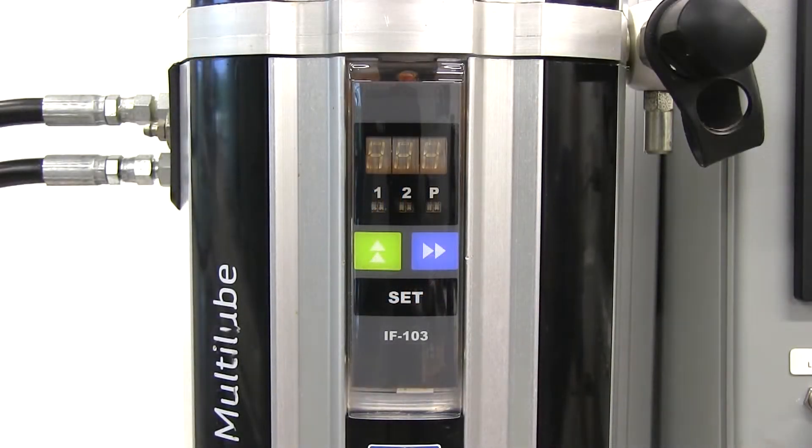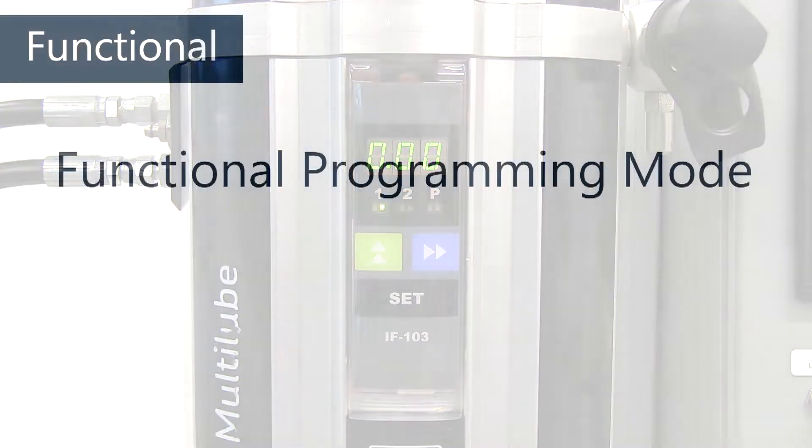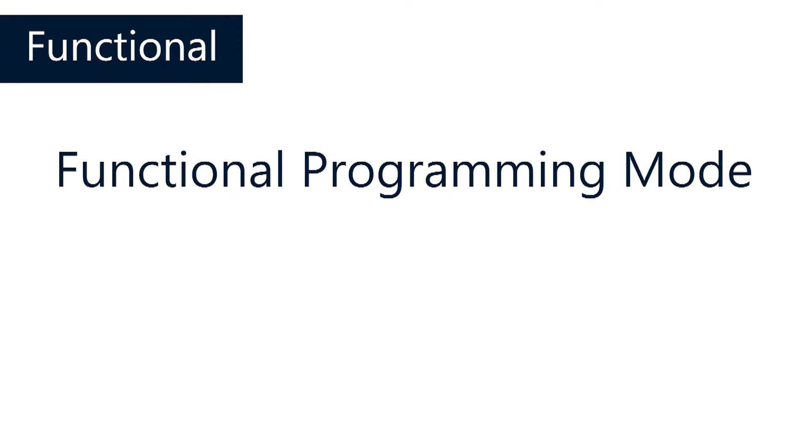The functional mode is displayed very quickly when the control unit is powered on. If G2P is indicated, then all is good. No change is required. Otherwise, the mode must be changed via the functional programming mode accessed with password 222.